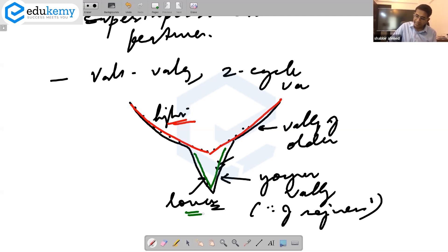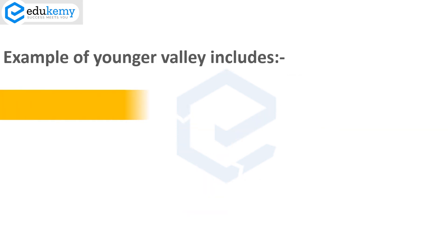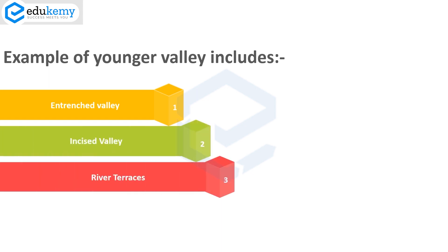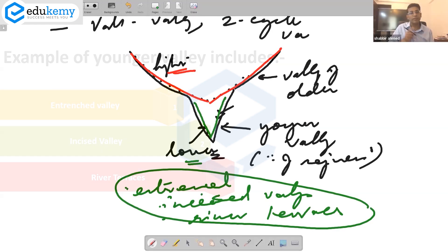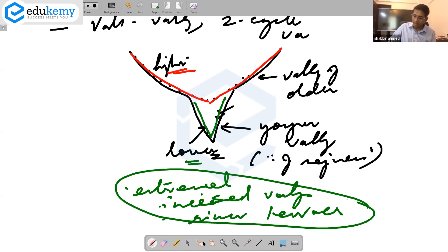Valley within valleys and examples of this also includes entrenched valleys, incised valleys. These features will also include river terraces. All of this we have discussed as a part of the earlier discussion.